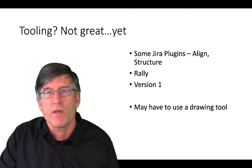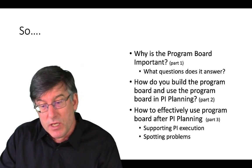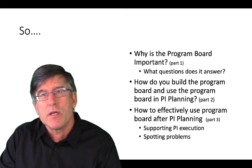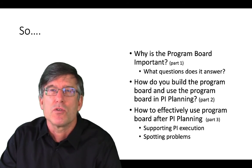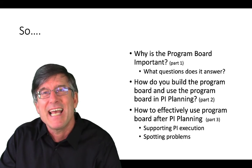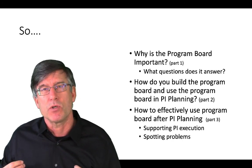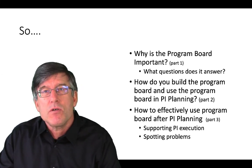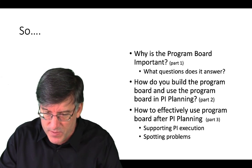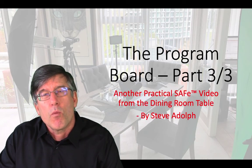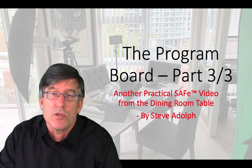To summarize this video series: we've learned why the program board is important — it is a big visible information radiator that helps us resolve issues during program increment planning and during the execution of the PI. We talked about how the board is built and the routine teams go through to add dependencies. We've also emphasized the importance of using the program board during PI execution. Thank you for watching this series, and if you have any comments or feedback, please add those to the comments. Thank you and good day.